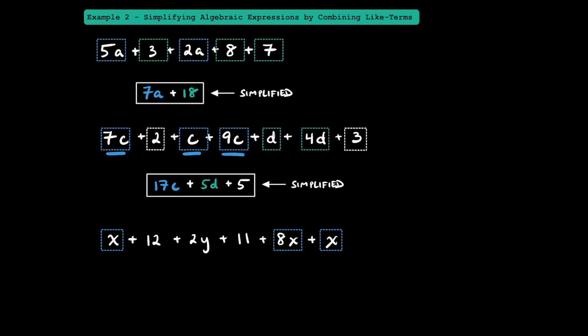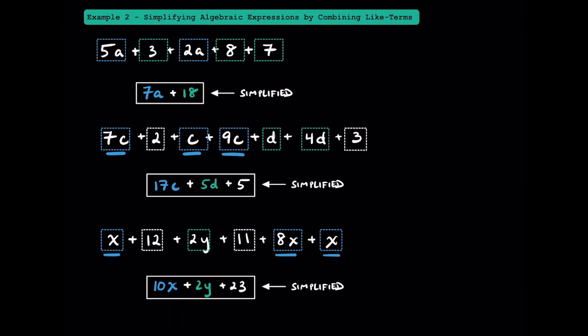And here's one more. Combining 1x plus 8x, that's 9x, plus 1 more x is a total of 10x. This 2y is all on its own, so we're just going to have 2y here. And the constant terms of 12 and 11 can be combined to make 23. Here's our simplified expression. These are just three examples of how to simplify algebraic expressions by combining like terms.